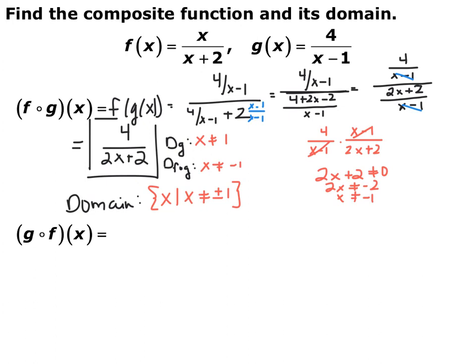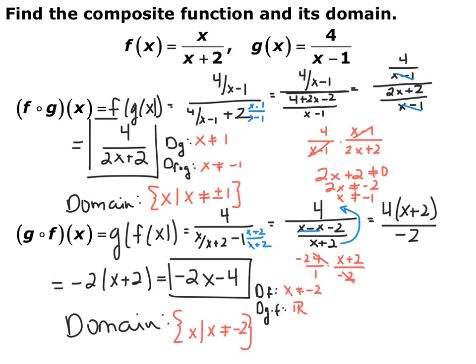Go ahead and try g composed with f of x — find the composition and its domain. So g composed with f of x gives you 4 over x, over x plus 2 minus 1. When you simplify with a common denominator, the denominator gets moved to the numerator using keep-flip-change, and you end up with 4 over negative 2x minus 4. For the domain, the inside function has domain x cannot equal negative 2. The final function is just a line, so all real numbers. The most restrictive is x cannot equal negative 2.